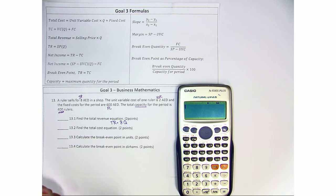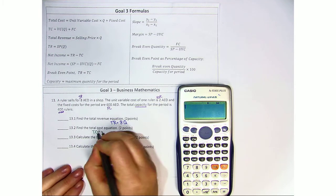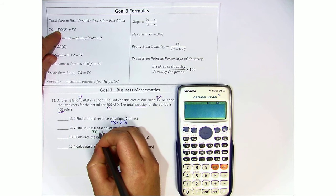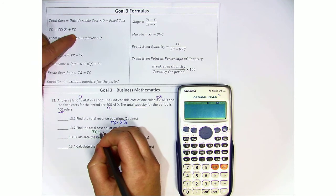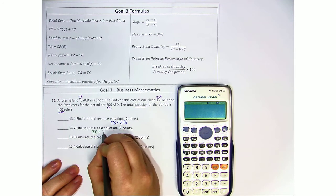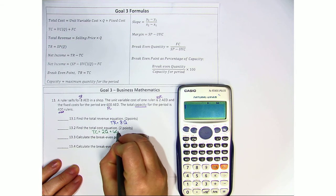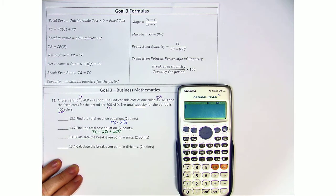Find the total cost equation. So let's go ahead and look at the formula sheet. Total cost is variable cost times quantity plus the fixed cost. So the variable cost is 2, we don't know the quantity, and we have to add a fixed cost of 600 dirhams.